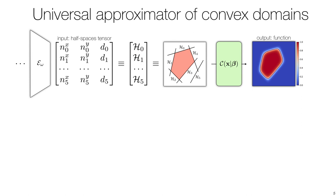We now introduce our differentiable universal approximator of convex domains. We start by having an encoder network predict the parameters of a collection of half-spaces and reconstruct convex polytopes as their intersection.